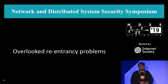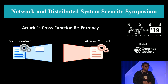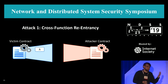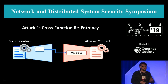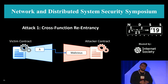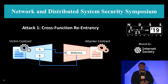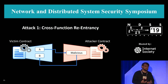Let me tell you about those overlooked re-entrancy attack problems. The first one is cross-function re-entrancy. We have a victim contract with function A, and function A performs an external call, which might lead to the attacker executing code. The developer of the victim contract is security conscious, so function A is absolutely safe to be re-entered. But nothing stops the attacker from re-entering a different function. If A and B share some state, this might lead to a re-entrancy bug.